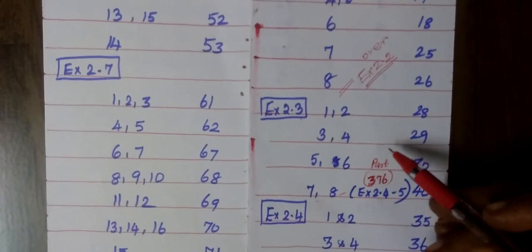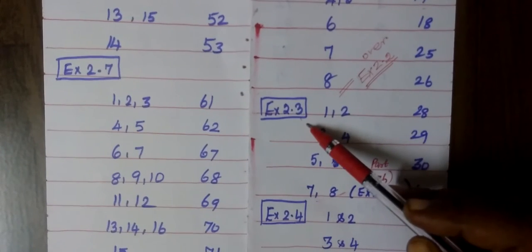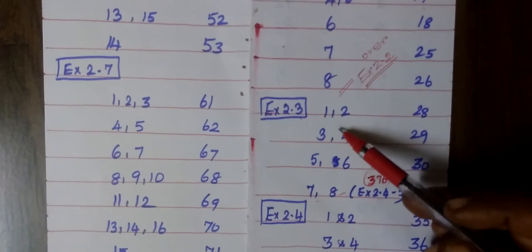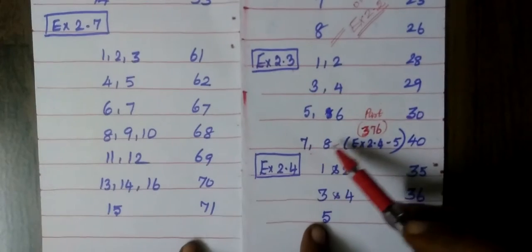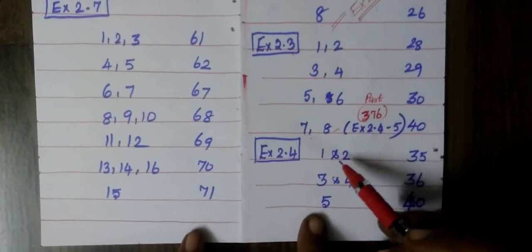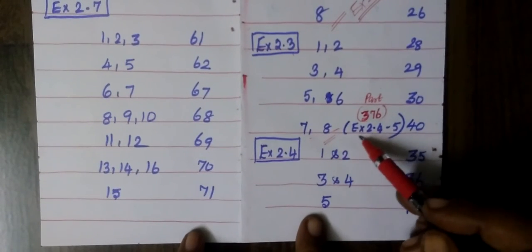Now coming to Exercise 2.3. See question number 1, 2, 3, 4, 5, 6, then 7, 8. So totally 8 questions in Exercise 2.3.